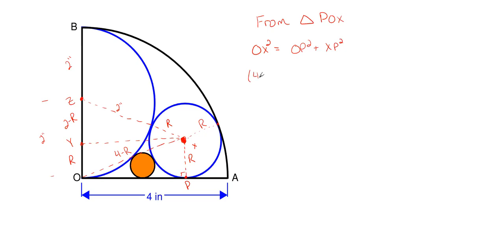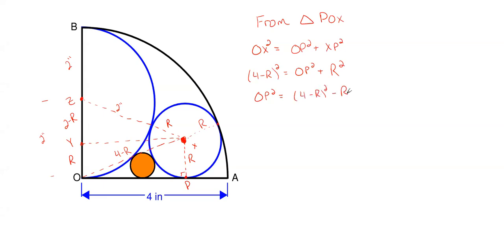Let's fill in the dimensions we know. OX is four minus R, so (four minus R) squared equals OP squared plus XP squared. XP is just my radius R, so R squared. Rearranging to solve for OP: OP squared equals (four minus R) squared minus R squared. Simplifying this down, OP squared equals 16 minus 8R.